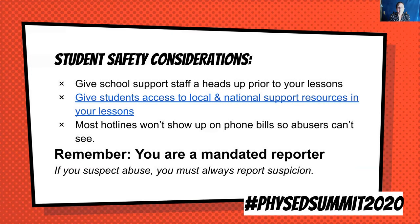Prior to your lessons, give the school support staff a heads up. You might say, 'Next week we're going to talk about abusive relationships and healthy and unhealthy relationships — be on the lookout for any extra emails from my students.' With every lesson you can start and stop by providing students with local and national community resources embedded in your lessons. Also, most hotlines won't show up on your phone bill — if you call a dating abuse hotline, it won't appear so abusers cannot see it. And of course, we are all mandated reporters. If you suspect abuse, you must always report that suspicion.